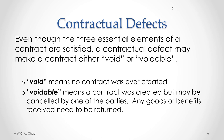When we say a contract is void, it means that because of that defect, no contract was ever created. There could be certain defects which cause a contract to be voidable, which means a contract is valid and was created, but may be cancelled at the option of one of the parties. So when the contract is cancelled, any goods or benefits received would need to be returned.